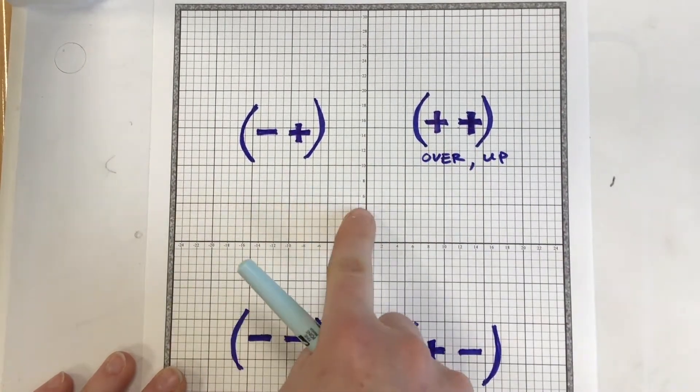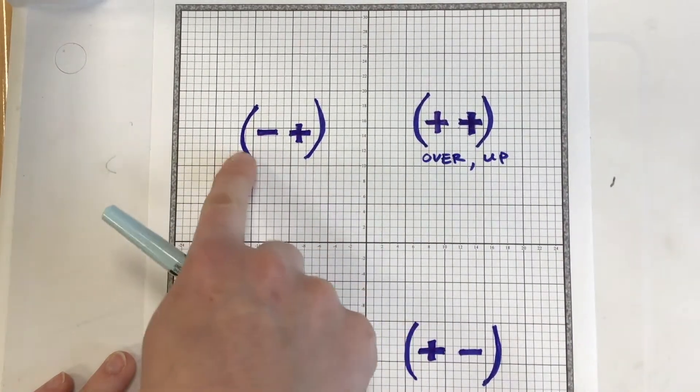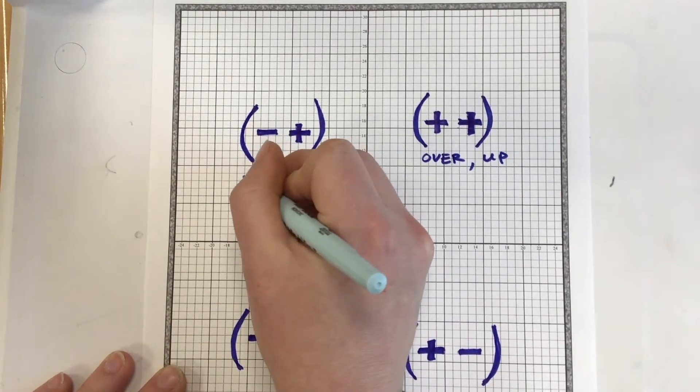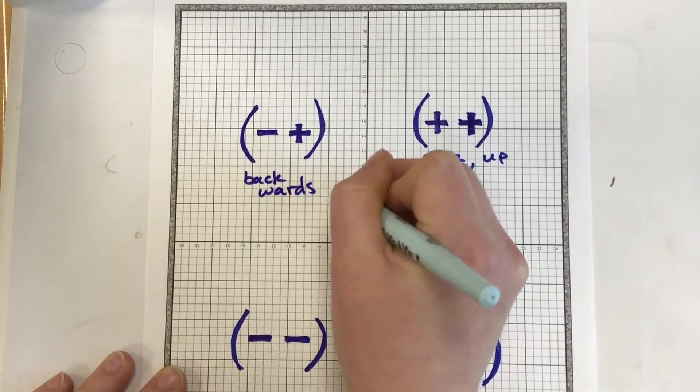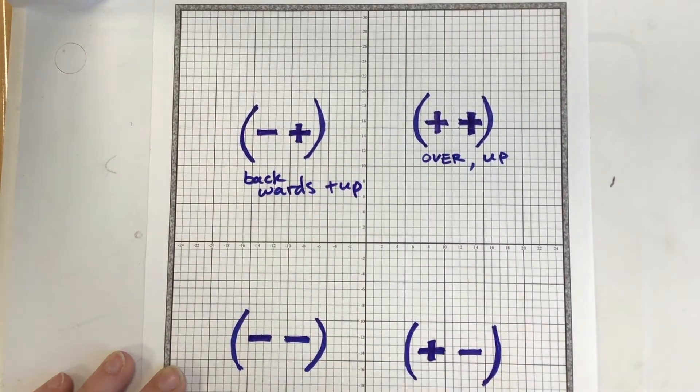This over here is backwards and up. This is negative positive. So I'm going to go backwards and up.